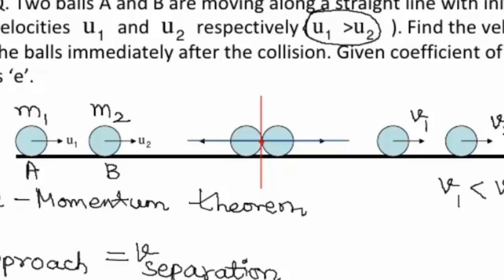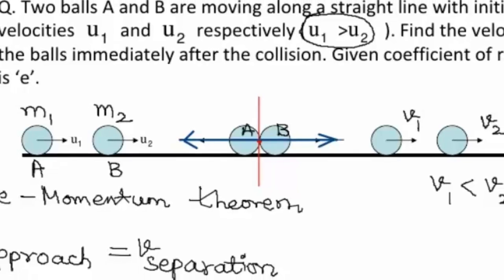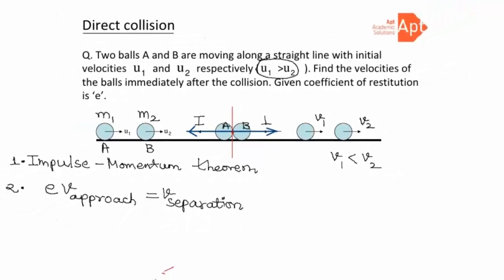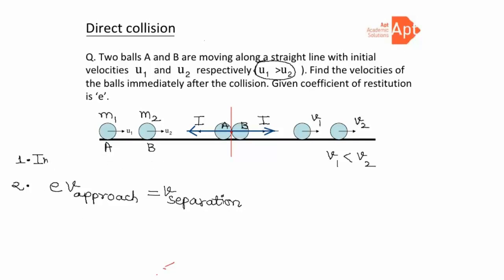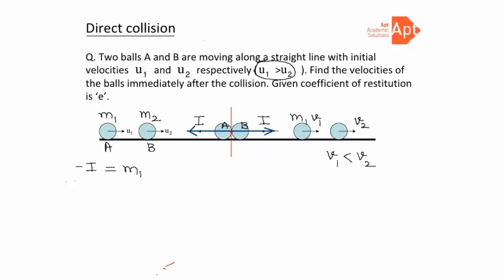The impulse imparted to ball A by ball B acts in the negative x-direction. By Newton's third law — every action has an equal and opposite reaction — the impulse on ball B by ball A is equal and opposite. Let's call this impulse I. Applying the impulse-momentum theorem for ball A: the impulse is −I, equal to the change in momentum, which is m1·v1 minus m1·u1.